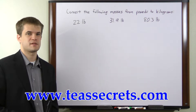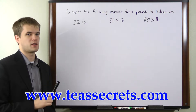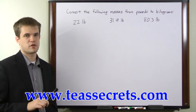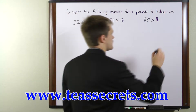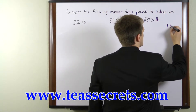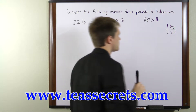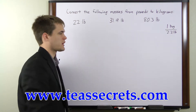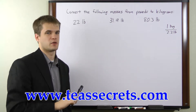Here we're given a set of masses in pounds and asked to convert them into kilograms. To do this we're going to need a conversion factor, so we're going to use a conversion factor of 1 kilogram per 2.2 pounds. By multiplying each of these masses by that conversion factor, we'll get our masses in kilograms.